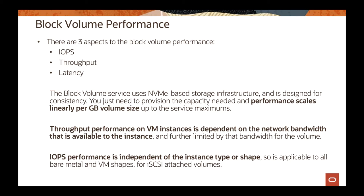Throughput is also part of the performance metrics, but throughput is tied to the VM shape. Depending on the shape you deploy, that determines the network throughput, which also impacts storage performance. When you deploy a compute VM shape, make sure you're picking the right size for your application and the right size for your performance — select the shape that meets your requirements. IOPS, however, is independent of the instance shape or type. IOPS can be measured on any type of VM shape and will give you the performance covered under the SLA.